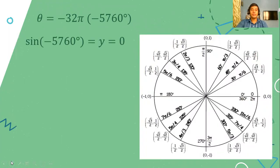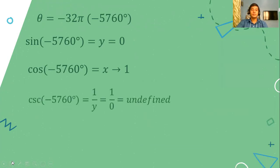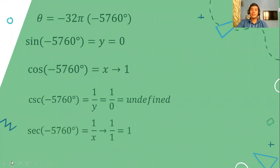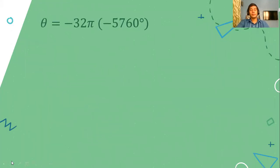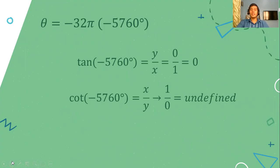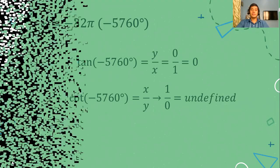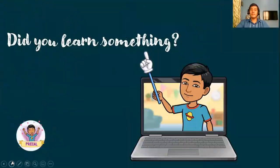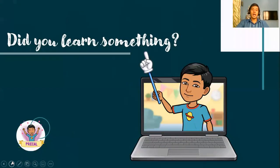The trigonometric point for −5,760° is (1, 0). So sine of −5,760° equals 0 (the y-value). Cosine of −5,760° equals 1 (the x-value). For cosecant, it's 1 divided by 0, which is undefined. For secant of −5,760°, we have 1. For tangent, we have 0 divided by 1, which equals 0. For cotangent, it's 1 divided by 0, which is undefined. Notice that it is possible to get negative values, positive values, zero, or undefined values for the exact values of the circular functions.